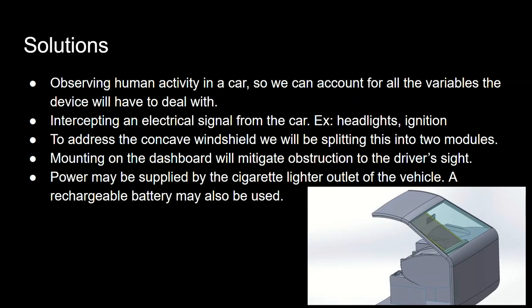Solutions: observing human activity in a car to account for all variables the device will have to deal with. Intercepting an electrical signal from the car — for example, headlights and ignition. To address the concave windshield, we will be splitting this into two modules. Mounting on the dashboard will mitigate obstruction to the driver's sight. Power may be supplied by a cigarette lighter outlet or a rechargeable battery.